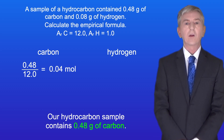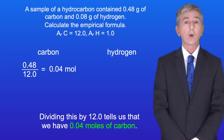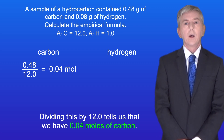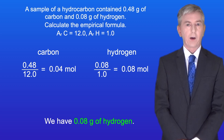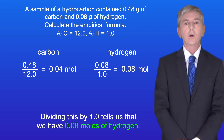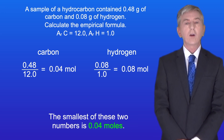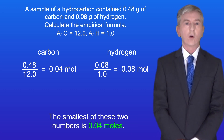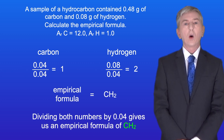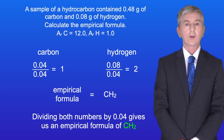Our hydrocarbon sample contains 0.48 grams of carbon. Dividing this by 12.0 tells us that we have 0.04 moles of carbon. We have 0.08 grams of hydrogen. Dividing this by 1.0 tells us that we have 0.08 moles of hydrogen. The smallest of these two numbers is 0.04 moles. Dividing both numbers by 0.04 gives us an empirical formula of CH2.